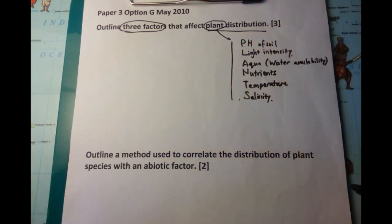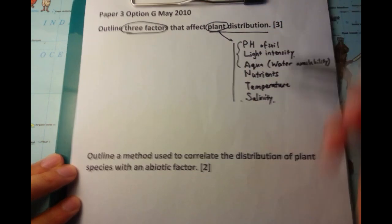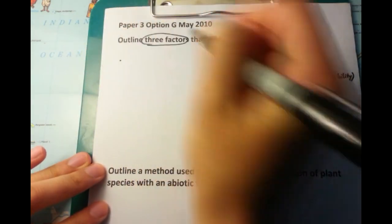You can even port these over to animal distribution as well if you want. I'm only going to talk about the top three because it talks about outlining three different factors.